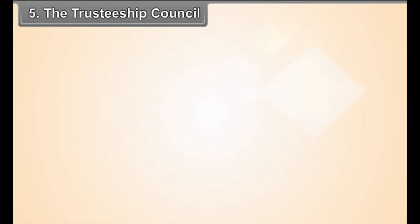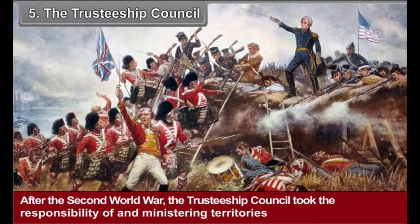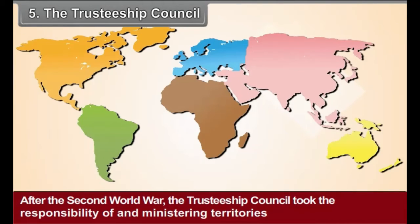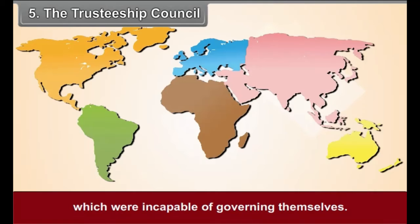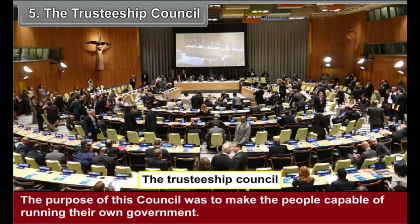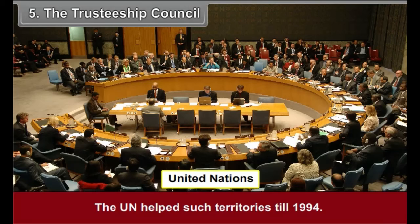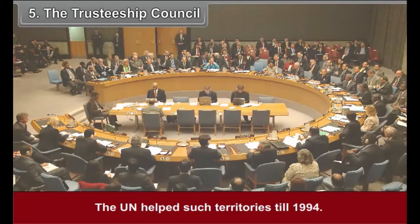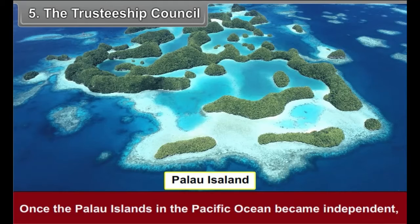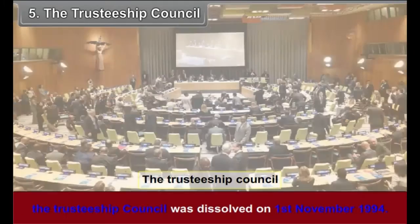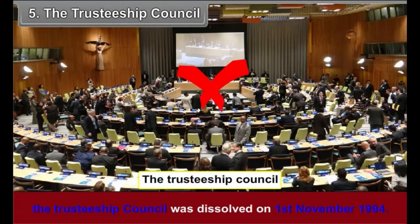The Trusteeship Council: After the Second World War, the Trusteeship Council took the responsibility of administering territories which were incapable of governing themselves. The purpose of this Council was to make the people capable of running their own government. The UN helped such territories till 1994. Once the Palau Islands in the Pacific Ocean became independent, the Trusteeship Council was dissolved on 1st November 1994.